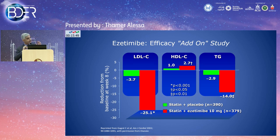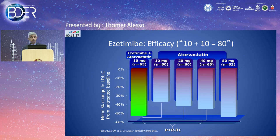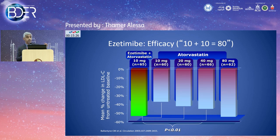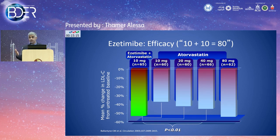Importantly, combining ezetimibe with statin therapy can spare patients from very high statin doses. Atorvastatin 10 mg plus ezetimibe 10 mg achieves approximately 50% LDL reduction — equivalent to what atorvastatin 80 mg achieves alone. This is particularly valuable in patients who are intolerant to very high doses of statin therapy.